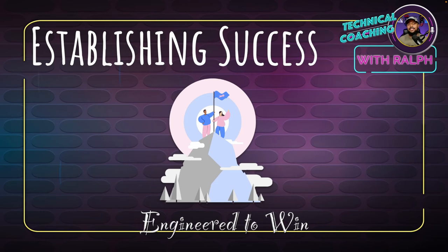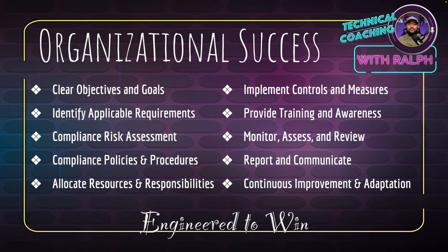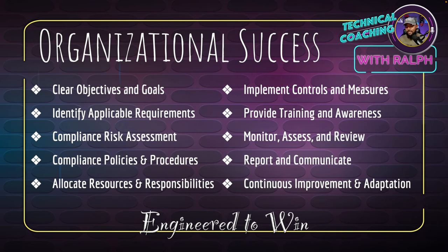To establish organizational success with compliance, key guidelines include: setting clear objectives, identifying applicable requirements, conducting compliance risk assessments, establishing compliance policies and procedures, allocating the right resources and responsibilities, implementing controls and measures, providing proper training and awareness, continuously monitoring, assessing, and reviewing, reporting and communicating, and finally, continuous improvement and adaptation — always having the willingness to adjust, to learn, and to shift.